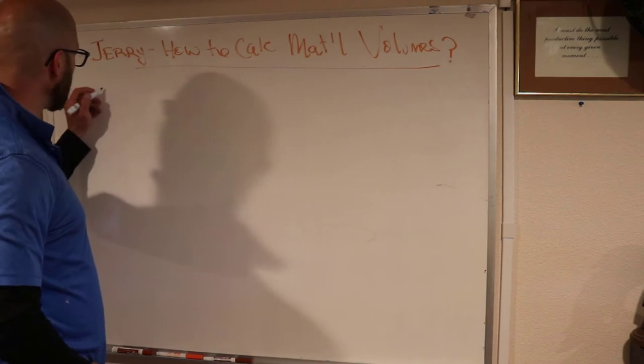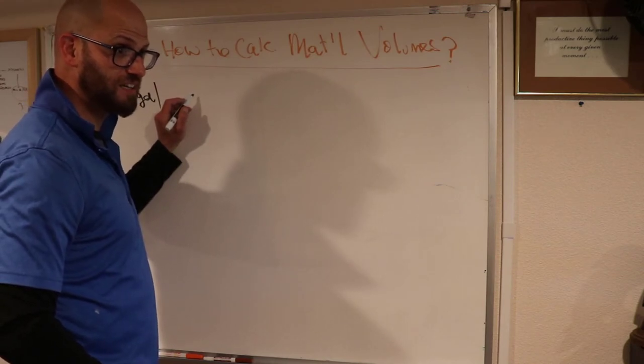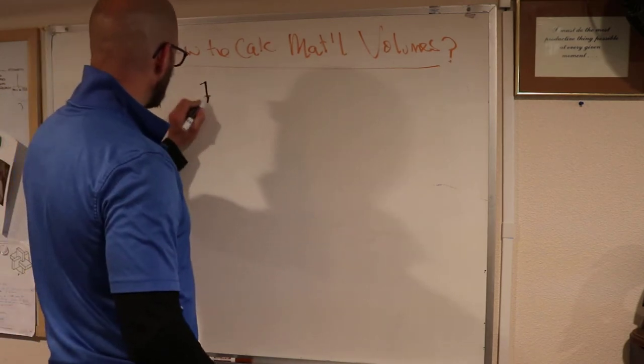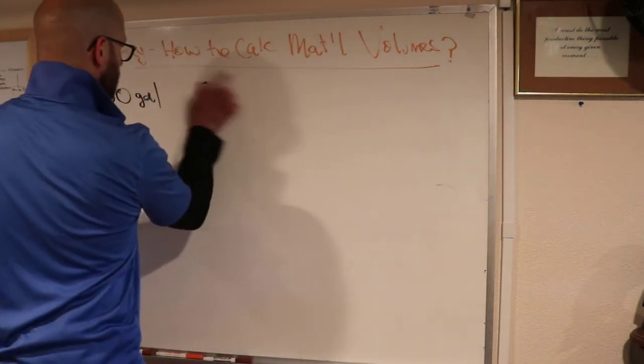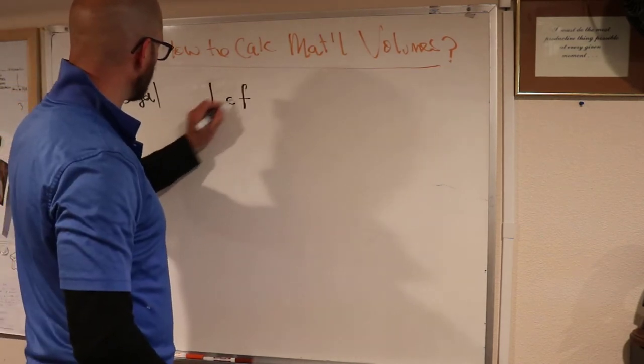We know we have a 30 gallon pail. 7.48 cubic feet to one gallon, okay. So we're gonna set it up like this: we're gonna say one cubic foot over 7.48 gallons.